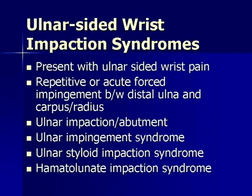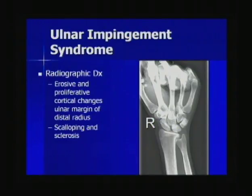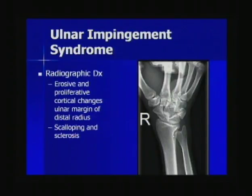Other ulnar-sided wrist impaction syndromes presenting with ulnar-sided wrist pain include: ulnar impaction (abutment), ulnar impingement syndrome, ulnar styloid impaction syndrome, and hamate-lunate impaction syndrome. Ulnar impingement is a distinct entity — caused by a shortened distal ulna impinging on the distal radius proximal to the sigmoid notch. It can be post-surgical, associated with negative ulnar variance, or due to premature fusion of the distal ulna. It is primarily a radiographic diagnosis showing erosive and proliferative cortical changes, scalloping, and sclerosis along the distal radius. On MR, you see chondromalacia in the ulnar seat, subtle bone sclerosis or edema, and remodeling of the distal radius.